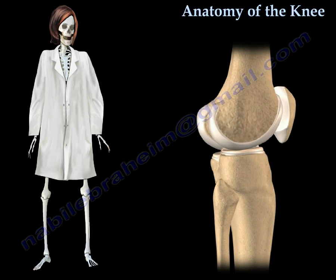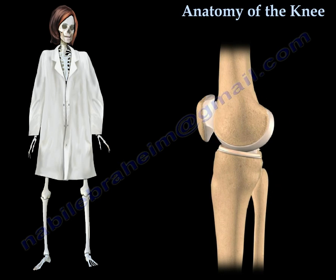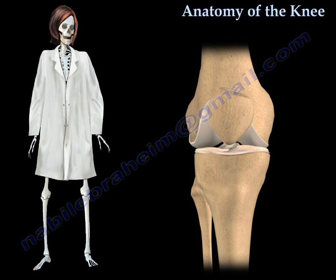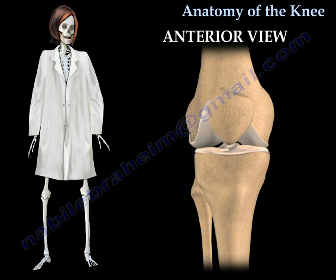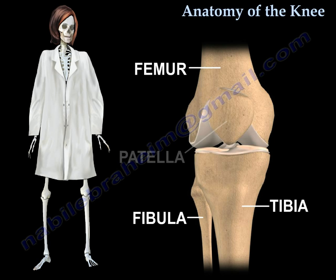The knee is one of the most complex joints in the body. This is the interior, or the front view of the knee. The knee is made up of four main bones: the femur, the tibia, the fibula, and the patella.